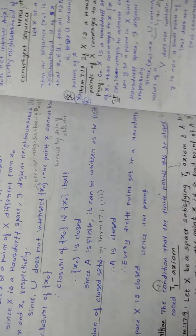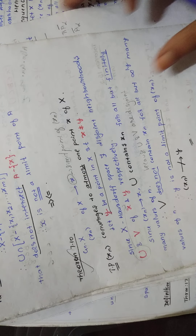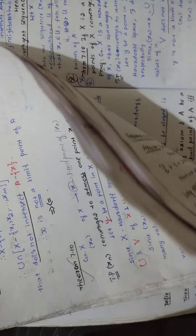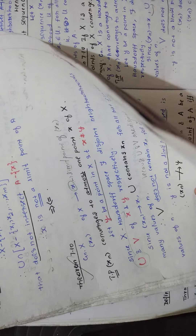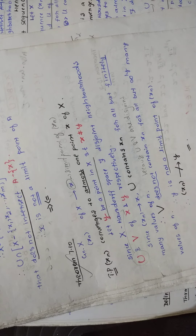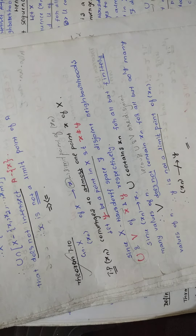Let me start explaining the proof using my notes. First, you have to write the given: X is a Hausdorff space. Then, suppose XN is a sequence of X. The statement does not mention any particular sequence, so you are taking a general sequence. Let XN be a sequence of X.